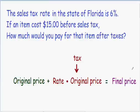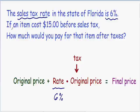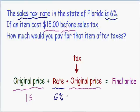Now we can go back to our word problem and plug everything in. The first line says the sales tax rate is 6%, so we can plug in 6% for our percentage rate. Moving on to the second line, it says an item costs $15 before sales tax — before sales tax means the original price — so the original price is $15. The original price is also being multiplied by the 6%, so we multiply 6% by $15.